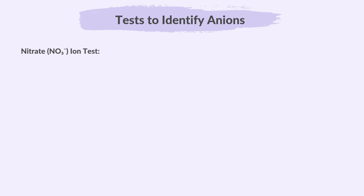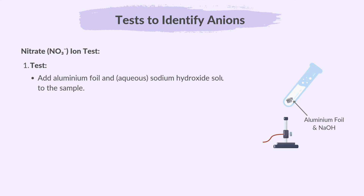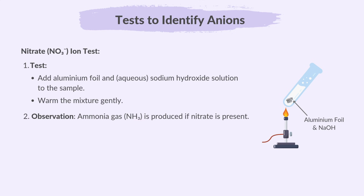For the nitrate ion test, add aluminium foil and aqueous sodium hydroxide solution to the sample, then warm the mixture gently. Ammonia gas is produced if nitrate is present.